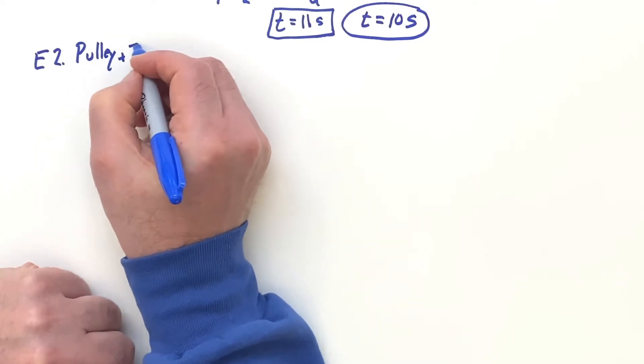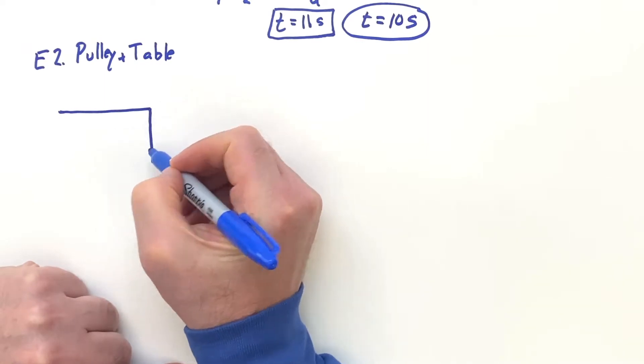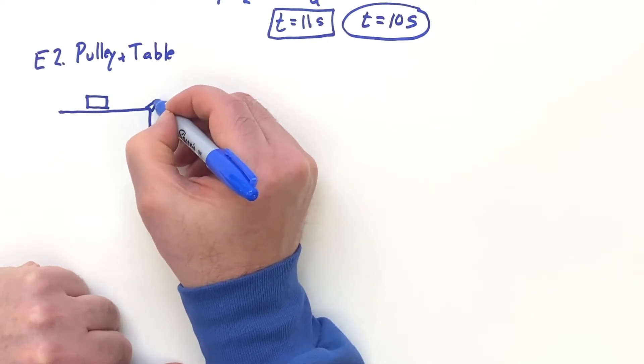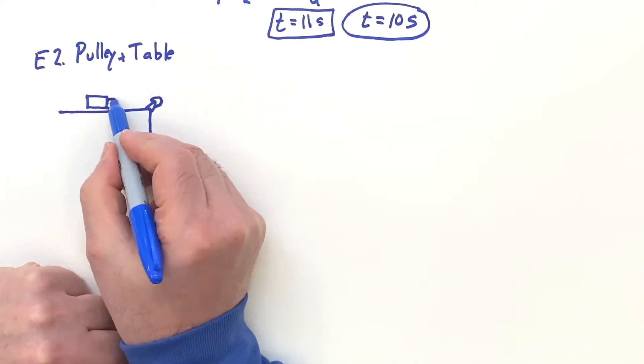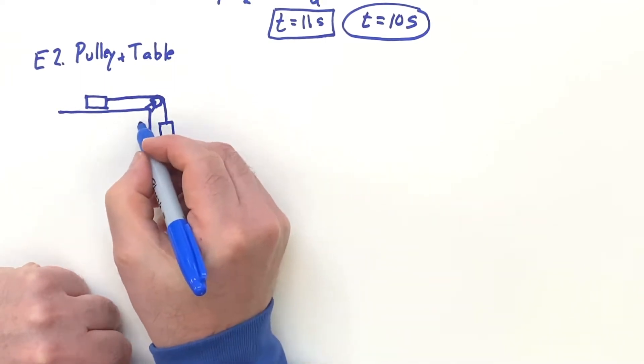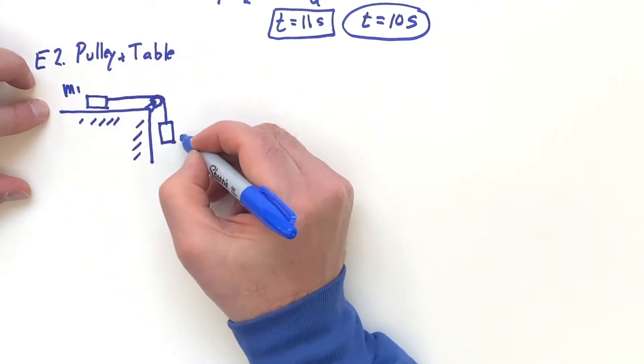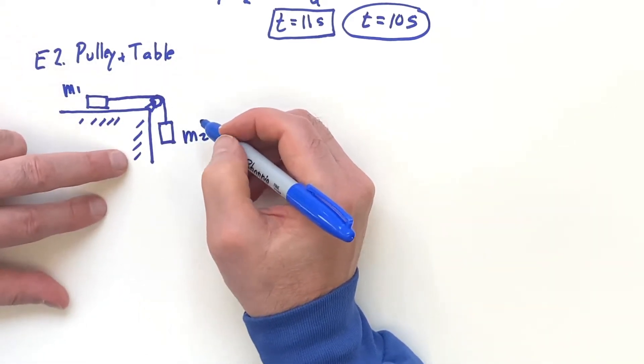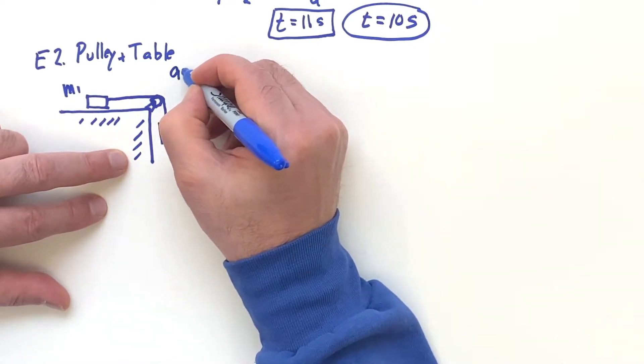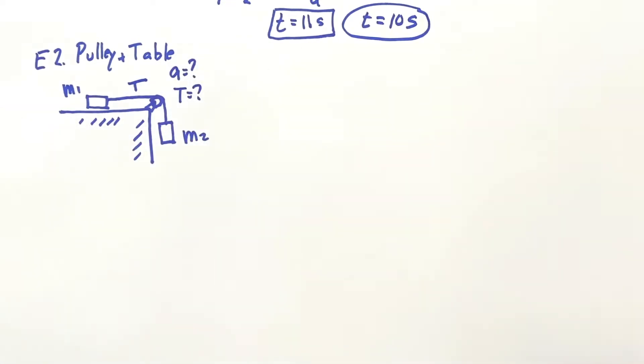E2 pulley and table. So in this case, go ahead and do the sketch here. This was given in a problem, but I like to sketch it anyway when I'm doing a solution. So some kind of a pulley there and here this is hanging another mass like that. This just emphasizes that that's stationary. So you have mass one and you have mass two and the problem says find the acceleration and find the tension in the rope or cable.